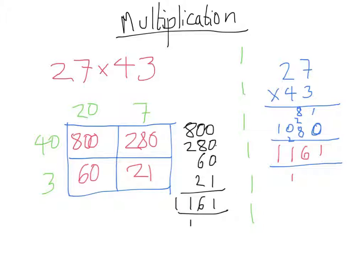You could also be asked a similar question in context. For example, a bus contains 27 seats and we want 43 buses. How many seats is that in total? To find the total number of seats, we do 27 times 43, because each bus would have 27 seats.